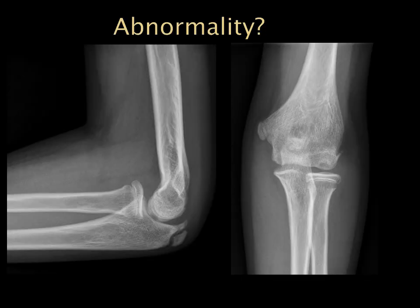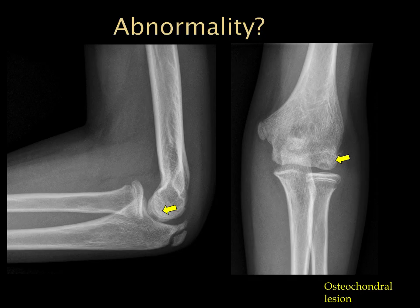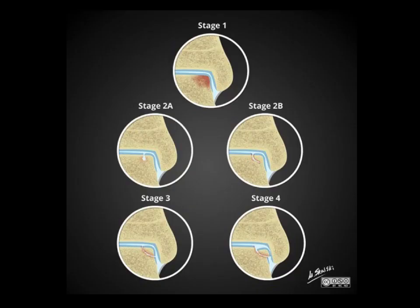On this lateral and frontal view of the elbow, we have an osteochondral lesion. It might be more subtle on the lateral but we see it well on the frontal view. These osteochondral lesions can be graded differently according to different systems.